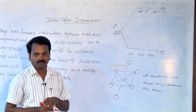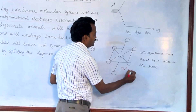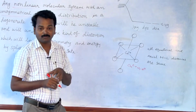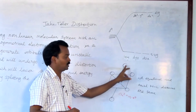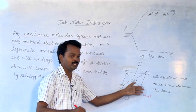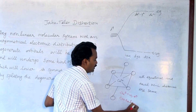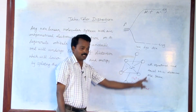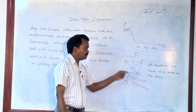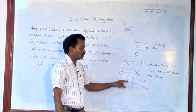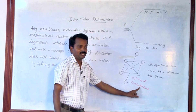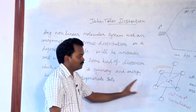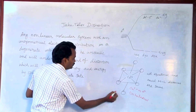Let me take one example. In the copper 2+ complex, copper 2+ is a D9 system. If this D9 system is surrounded by 6 ligands, it will form a perfect octahedral geometry. But actually, when all 6 ligands come toward the central metal atom copper 2+, forming a non-linear octahedral system, it will not follow the regular or perfect octahedral system.